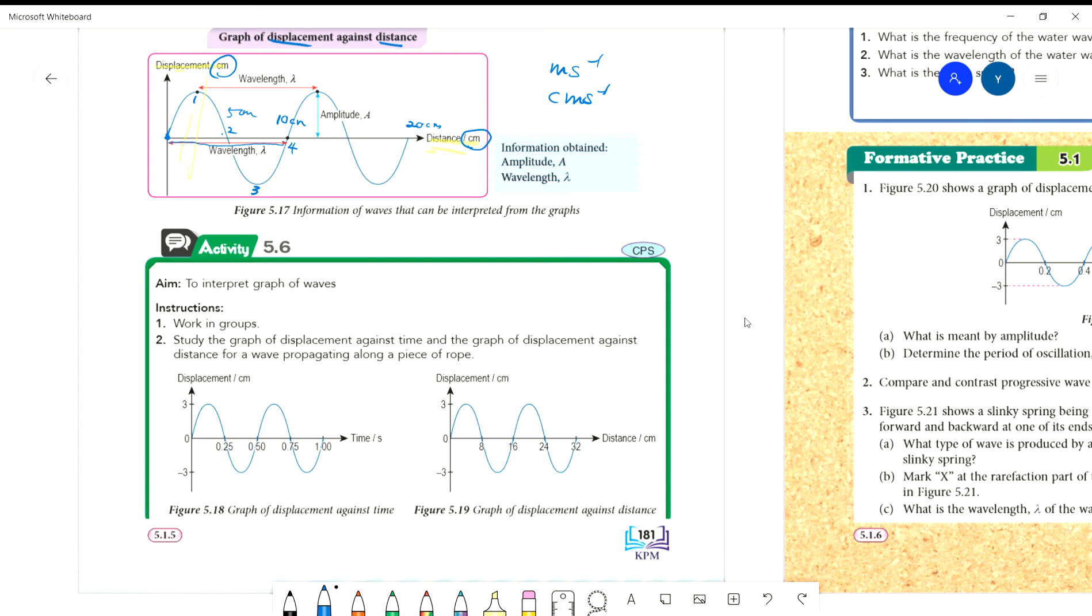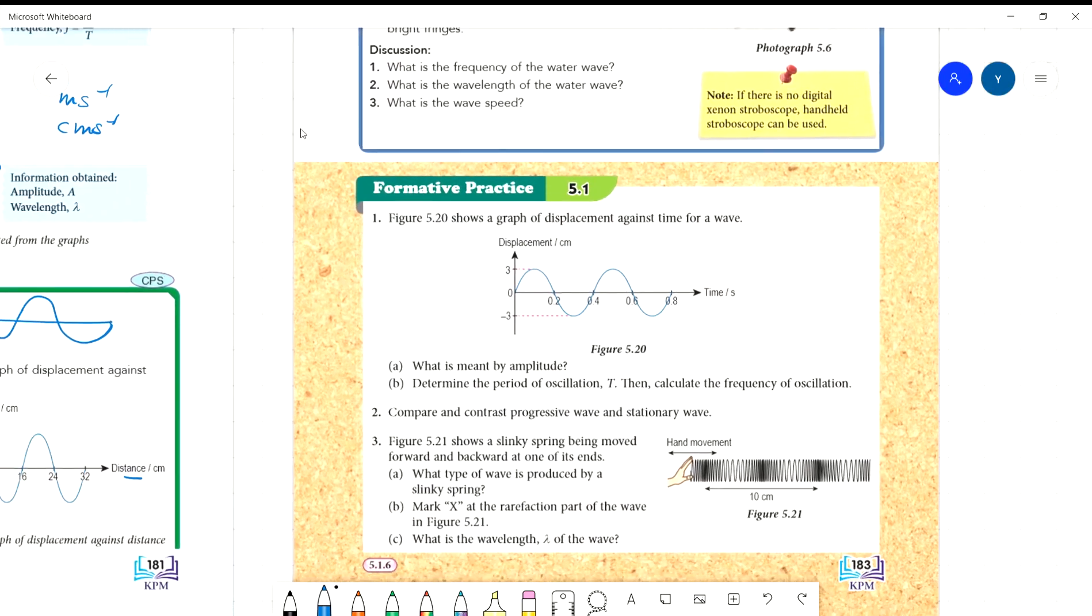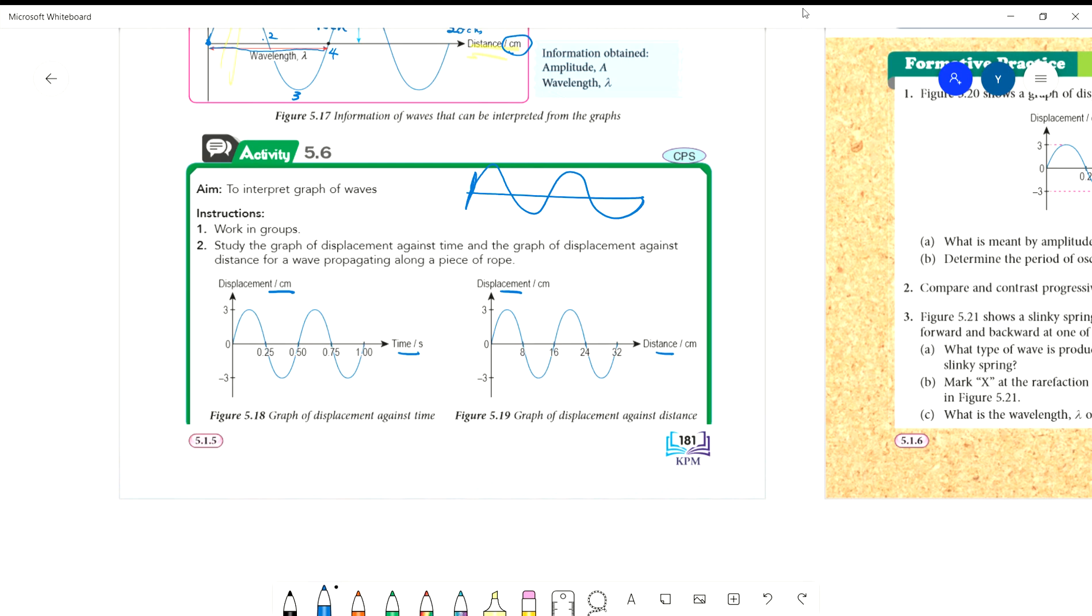Study the graph of displacement against time and distance for a wave propagating along a piece of rope. You shake the rope so it vibrates. For the same rope, we have both graphs. From here, the question can ask anything - all answers are in the graphs. What is the period? We look at graph A because period is time. It's 0.5 seconds, not here - this is half a cycle. What's the wavelength? Wavelength is 16 cm. From period we get frequency, and from frequency and period we can get velocity. Lambda over T - since this is in cm, your answer must be in cm per second.